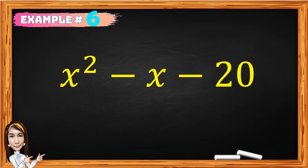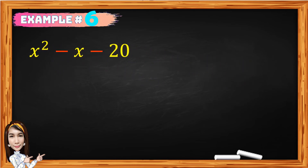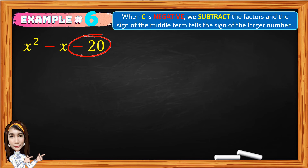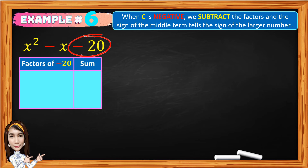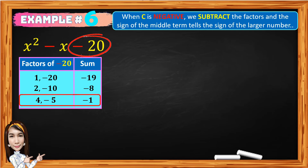Example number 6: x squared minus x minus 20. When c is negative, we subtract the factors and the sign of the middle term tells the sign of the larger number. Negative 20 is the product, so we need to get all the factors of negative 20. Notice the middle term is negative, so the sign of the larger number is negative and positive for the smaller. The factors of negative 20 are 1 times negative 20, 2 times negative 10, and 4 times negative 5. Subtracting and keeping the sign of the larger number: 1 plus negative 20 is negative 19, 2 plus negative 10 is negative 8, 4 plus negative 5 is negative 1. The sum refers to the coefficient of the middle term, which is negative 1. So the factors whose sum is negative 1 are 4 and negative 5.